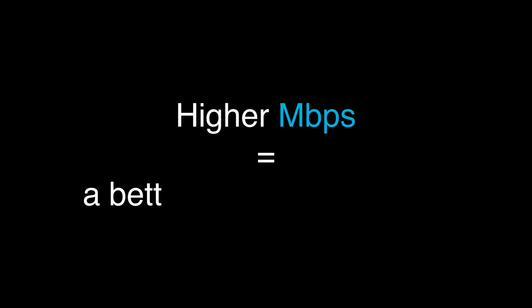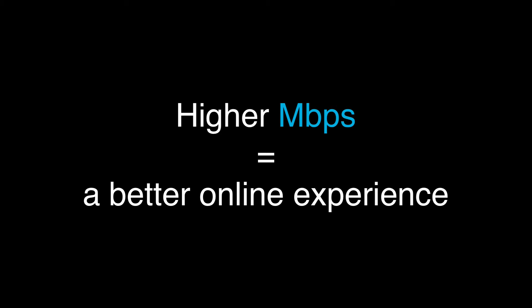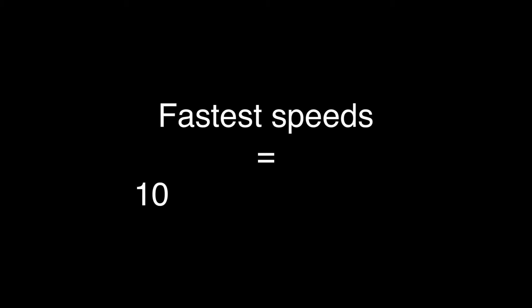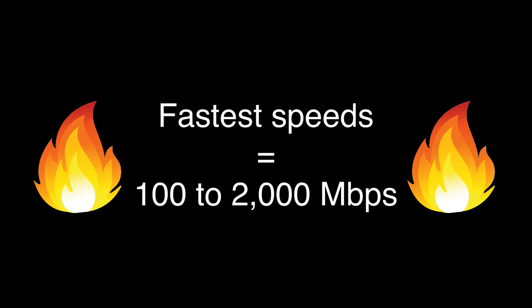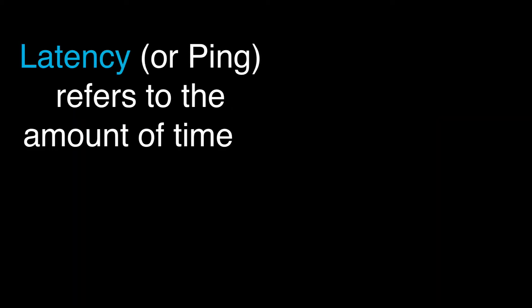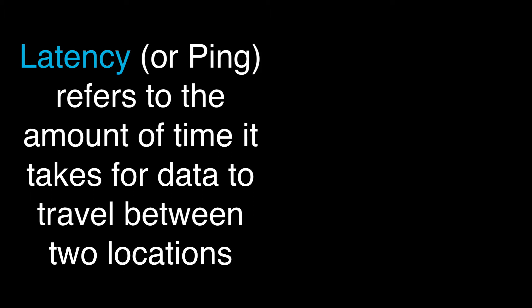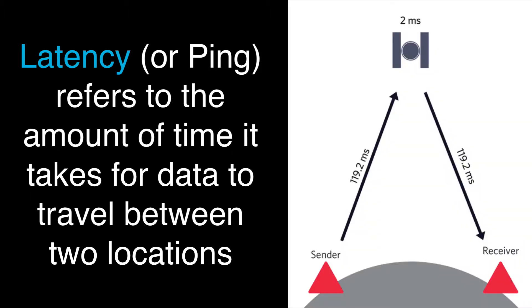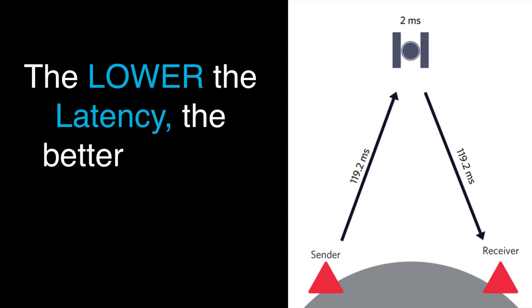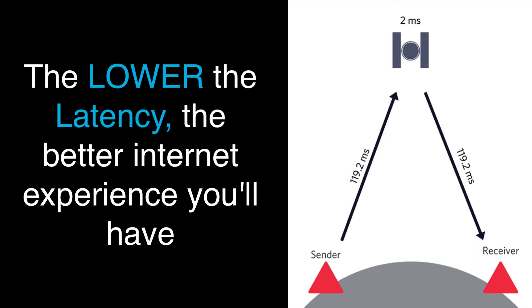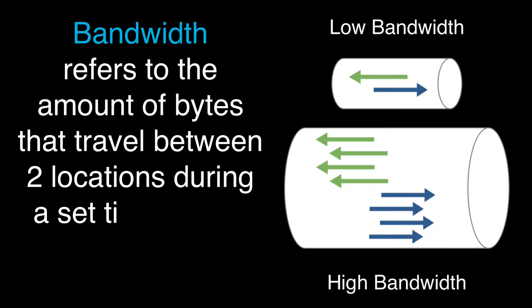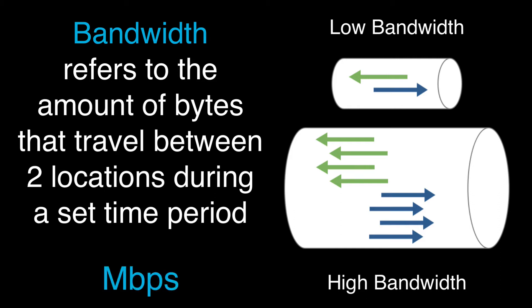The more megabits per second, the faster your online activity should be. Some of the fastest download and upload speeds range from 100 to 2000 megabits per second. Latency, also called ping, refers to the amount of time in milliseconds it takes for data to travel between two locations. The lower the latency, the better internet or gaming experience you'll have. Satellite services will take a little longer because the distance will always be greater. Bandwidth refers to how many bytes travel between two locations during a set time period, typically measured in megabits per second.